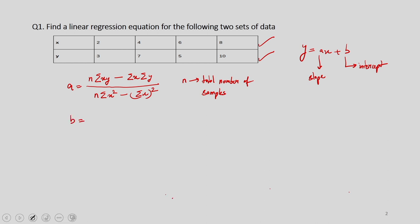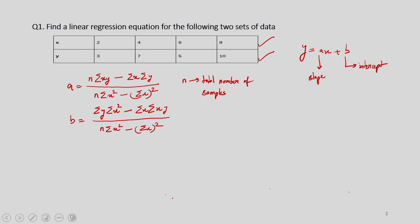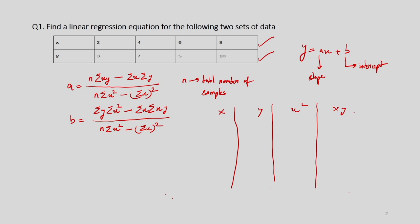Similarly, we have a formula for B. To calculate A and B, we first need to make a table for X, Y, X-squared, and find the summation. So we will make that table. The X values we have are 2, 4, 6, 8.